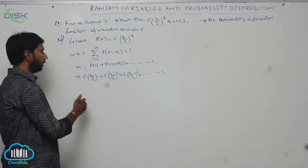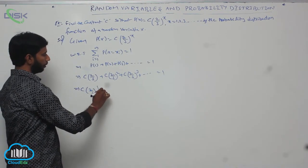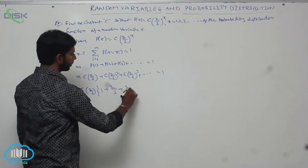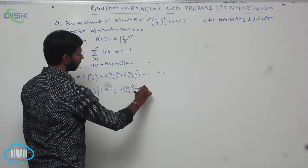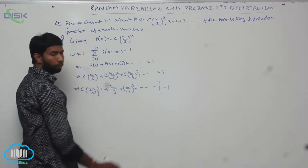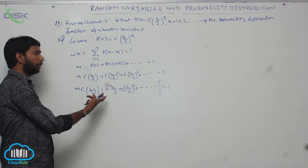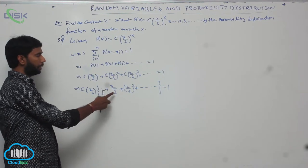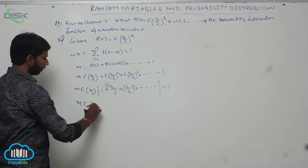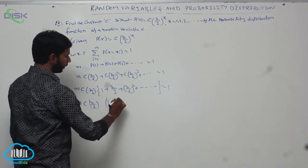Here, C times (2/3) is common, so we take it out: C times (2/3) times [1 plus (2/3) plus (2/3)^2 plus and so on] equals 1. The series 1 plus (2/3) plus (2/3)^2 and so on is of the form of a GP: 1 plus X plus X^2 plus and so on, which equals (1 minus X)^(-1).